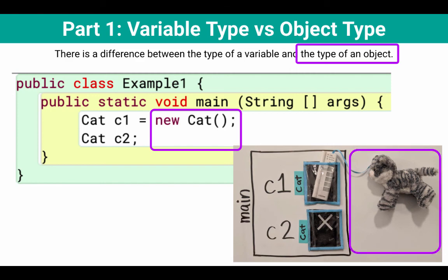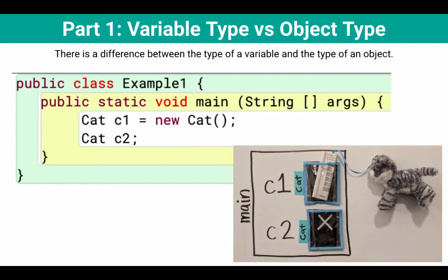And we can see that on the right hand side, we have the new cat object that we created. And in the case of c2, we didn't create a new object. So we don't even have an object or a type for that object. So here we were hitting the key learning goal that there's a difference between the type of a variable and the type of an object.